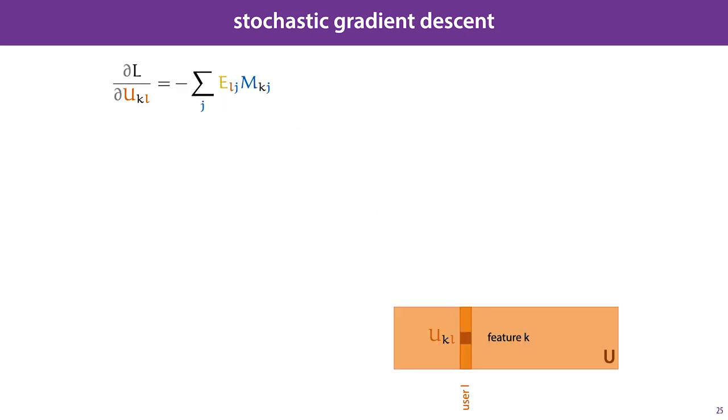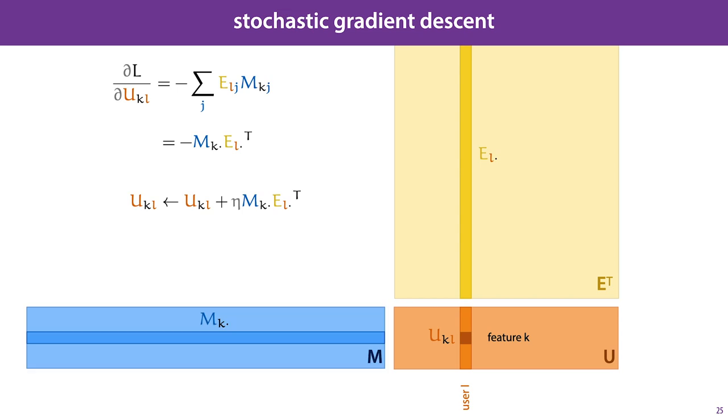Let's see what this means if we use it in a gradient descent update step. This is what we've worked out, which is the gradient for this one element of the user embedding matrix U, and we can rewrite this as a dot product. J iterates over the l-th row of E and the k-th row of m, so we can rewrite this gradient as the dot product of those two slices of these two matrices. And this tells us that if we apply a gradient update step to element k of the user embedding of user L, we are adding to it the dot product of this row of E, or column of E transposed, and this row of m.